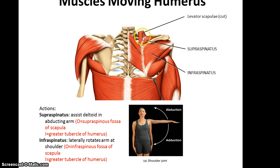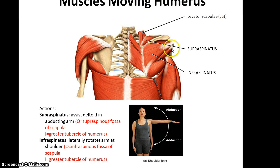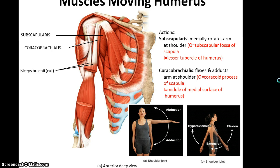We also have the supraspinatus muscle. It assists the deltoid in abducting the arm. Its origin is the supraspinous fossa of the scapula, and its insertion is the greater tubercle of the humerus. Then we have the infraspinatus muscle, which laterally rotates the arm at the shoulder. Its origin is the infraspinous fossa of the scapula, and its insertion is also the greater tubercle of the humerus. These two muscles are named after their origins. Then we have the subscapularis, which medially rotates the arm at the shoulder. Its origin is the subscapular fossa of the scapula, and its insertion is the lesser tubercle of the humerus.